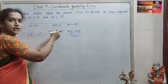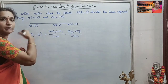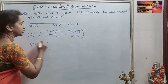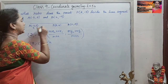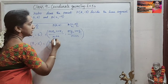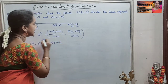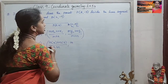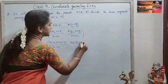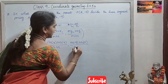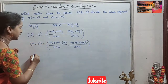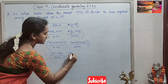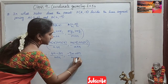So we will substitute the values of x1, x2, y1 and y2 and equate it with (2, -5). So (2, -5) equals m into x2 which is 4, plus n into x1 which is -3, divided by m plus n; comma m into y2 which is -9, plus n into y1 which is 5, divided by m plus n. So this simplifies to (4m - 3n) / (m + n) comma (-9m + 5n) / (m + n).